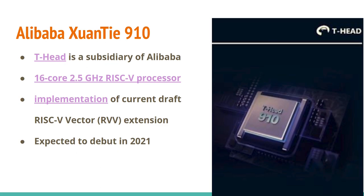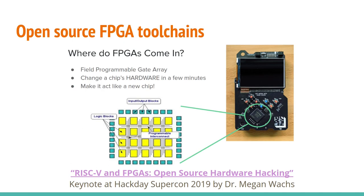The most impressive RISC-V chip I know of that's coming soon is from Alibaba. Alibaba has a chip design division called T-Head and they've created a 16-core 2.5 GHz certified RISC-V processor. There was an interesting paper about it at Hot Chips. It implements the current draft of the vector extension, which means it could handle AI workloads, inference, and matrix operations. This is expected to debut next year and may also have a dev board.